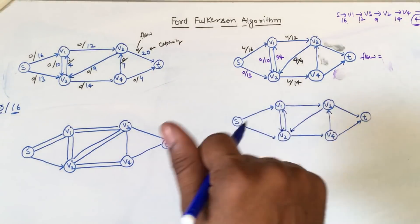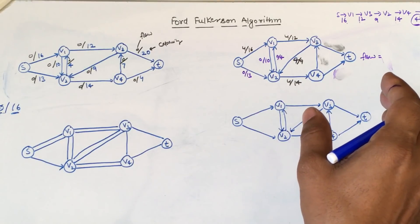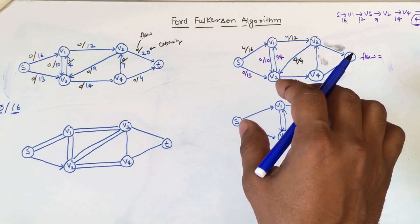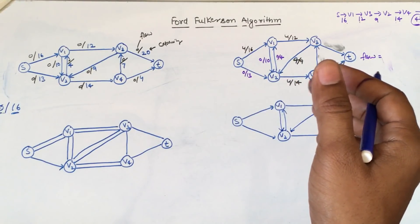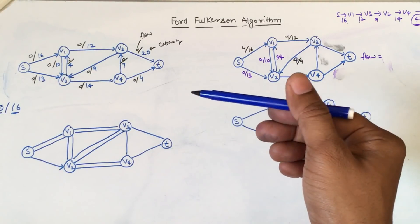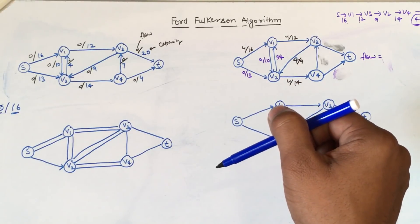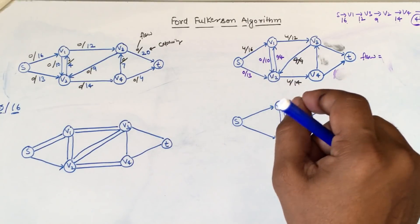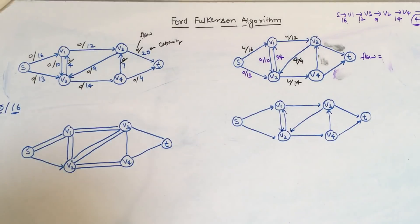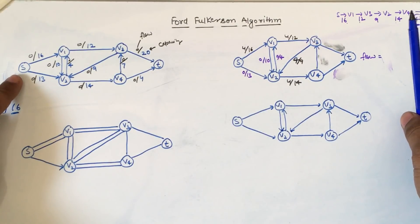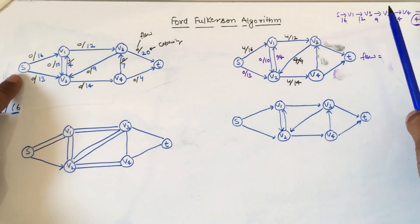The first step in the Ford-Fulkerson algorithm is to find the augmented path from source to destination. The augmented path is any path which has a positive residual capacity between cities. To find the augmented path, we check whether there is any residual capacity available in the forward direction to the destination.